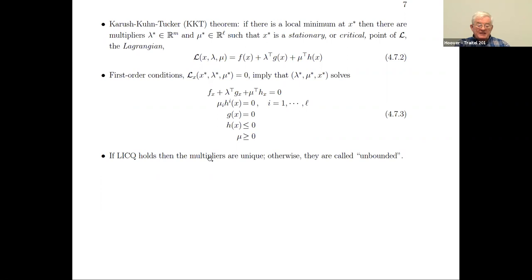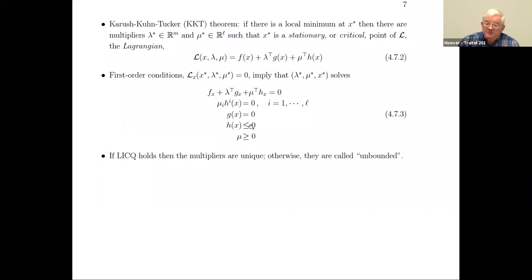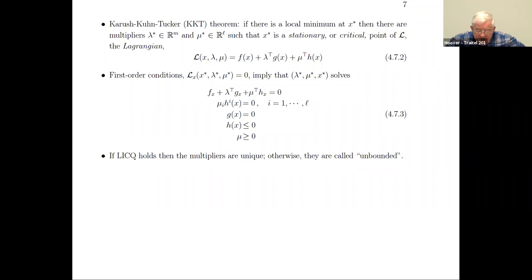If LICQ holds, then the multipliers are unique. If LICQ doesn't hold, then you have the possibility of multiple solutions for the lambdas. The mathematical expression is that the multipliers are unbounded — meaning the set of solutions is not finite.